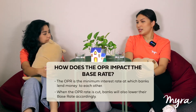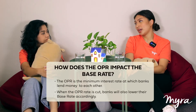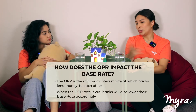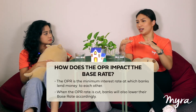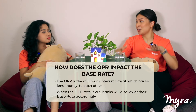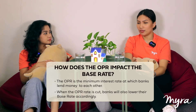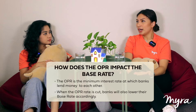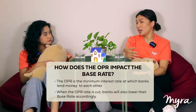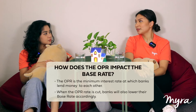Why does the OPR impact the base rate? The OPR is the minimum interest rate for banks, because banks loan each other money — that's their standard interest rate they give each other. So whenever the OPR rate is cut, they will also lower down their base rate accordingly. It depends on the banks as well, because they loan money from each other.